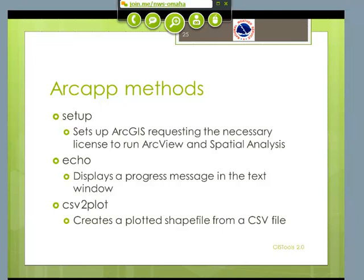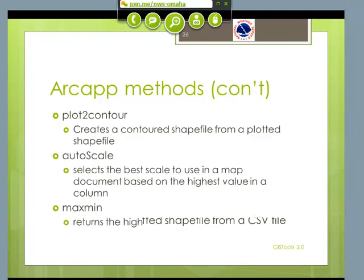This is the one everyone wants to see — plot to contour. What this will do is take the plotted shape file that you generated in the last step and contour it. You have a few options on how you want to do the contouring. For the GIS wizards out there, I'm basically using the topographic routines in Spatial Analyst to run this, and this idea I have to attribute to Nathan.